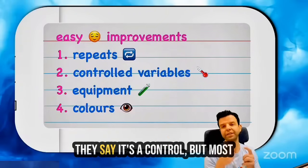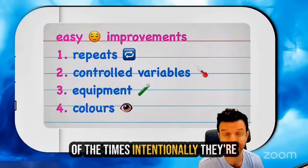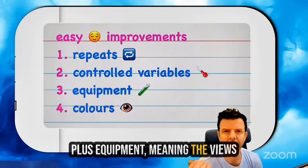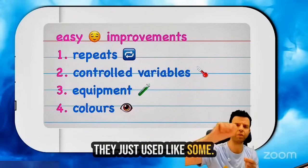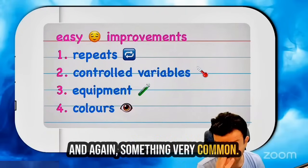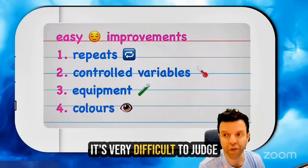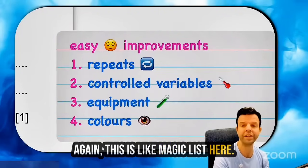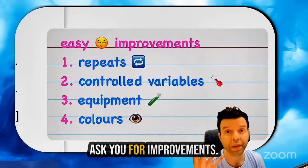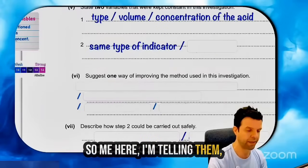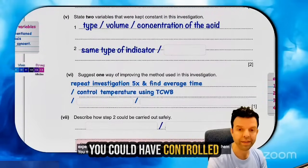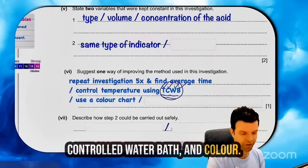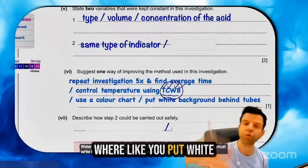Like first we said, if they've controlled temperature it's a controlled variable. But most of the time intentionally they're not going to control temperature, so you tell them you should have controlled the temperature. Plus equipment — meaning they did not use a measuring cylinder; they used a silly way of measuring volumes. And something very common: if you have a change in color, it's very difficult to judge colors only with your eyes, so we usually use a colorimeter. This is a magic list that will help you in all experiments whenever they ask for improvements. So I'm telling them: you must have repeated, you could have controlled temperature using a thermostatically controlled water bath, and for color judgment, you could put a white background behind to help judge the color in a better way.